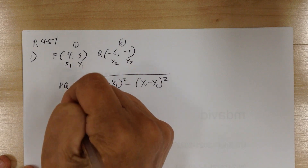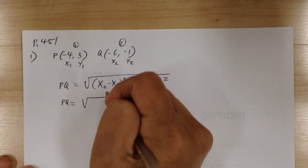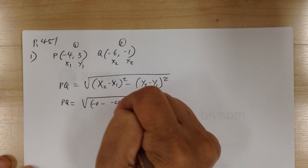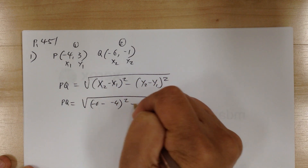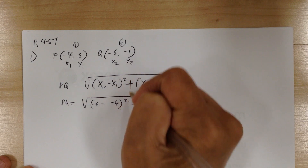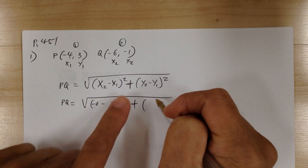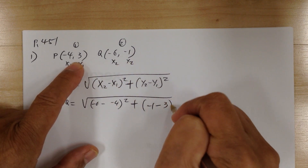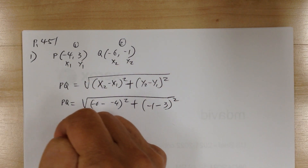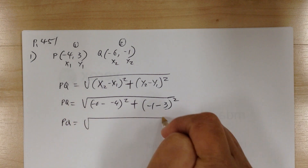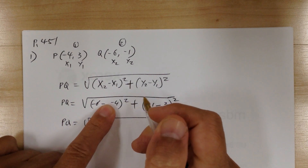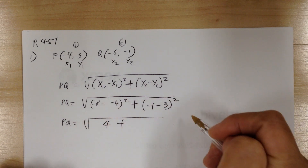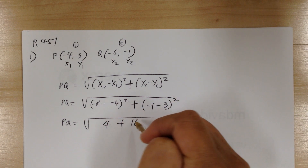So substitute everything in. You're going to get the square root of negative 6 minus negative 4, squared, plus negative 1 minus 3, squared. So the distance between P and Q: negative 2 squared becomes 4, and negative 4 squared would be 16.